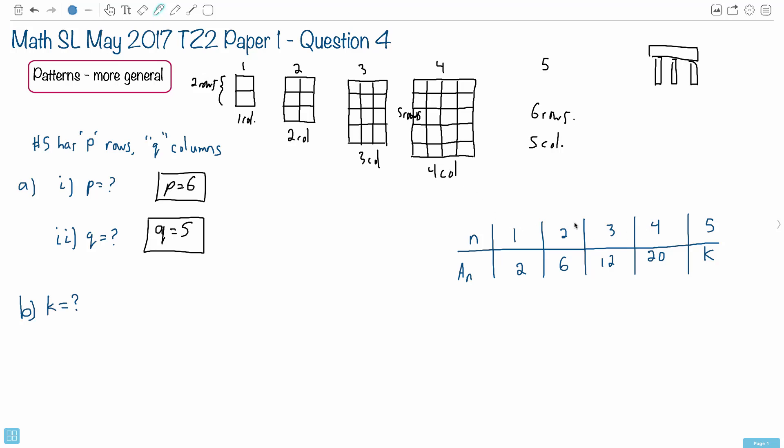So now we're given some extra information. We're told that we call this n equals 1, 2, 3, 4, 5. Those are these numbers right here. These are the numbers of which iteration of this diagram we have.